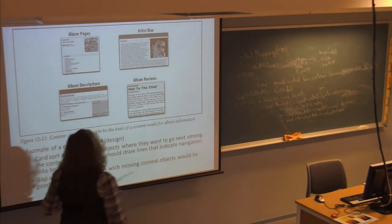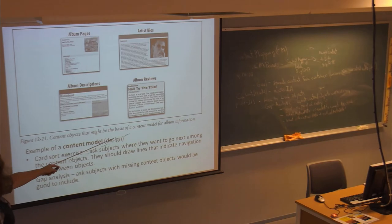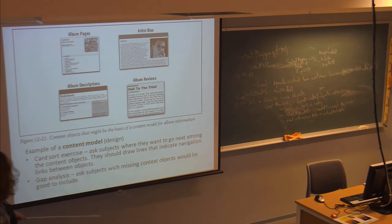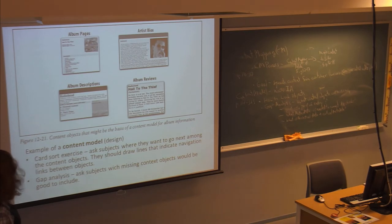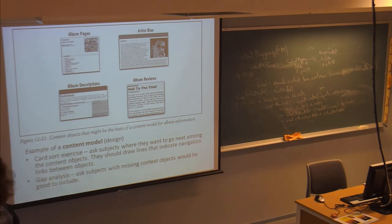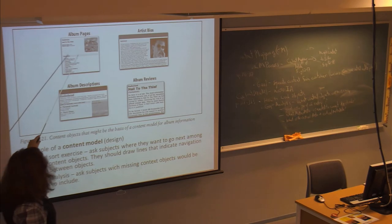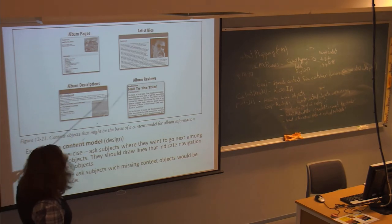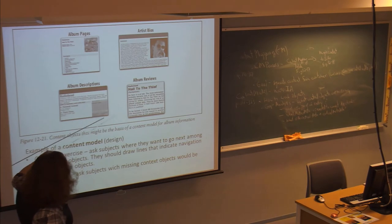The content model shown is for an album website. They identify the major pages needed, then ask subjects where they want to go next among the content objects and draw lines indicating navigation between them. For example, you might think there should be a connection from the album page to the artist's bio, to the album descriptions, or to the album reviews.